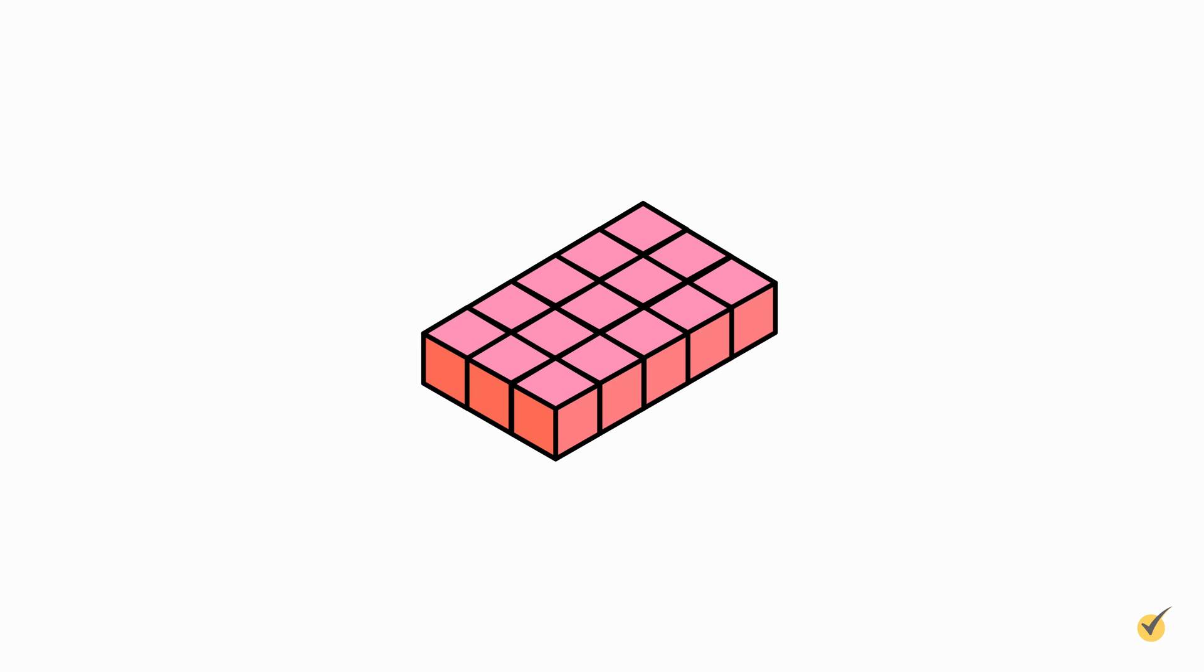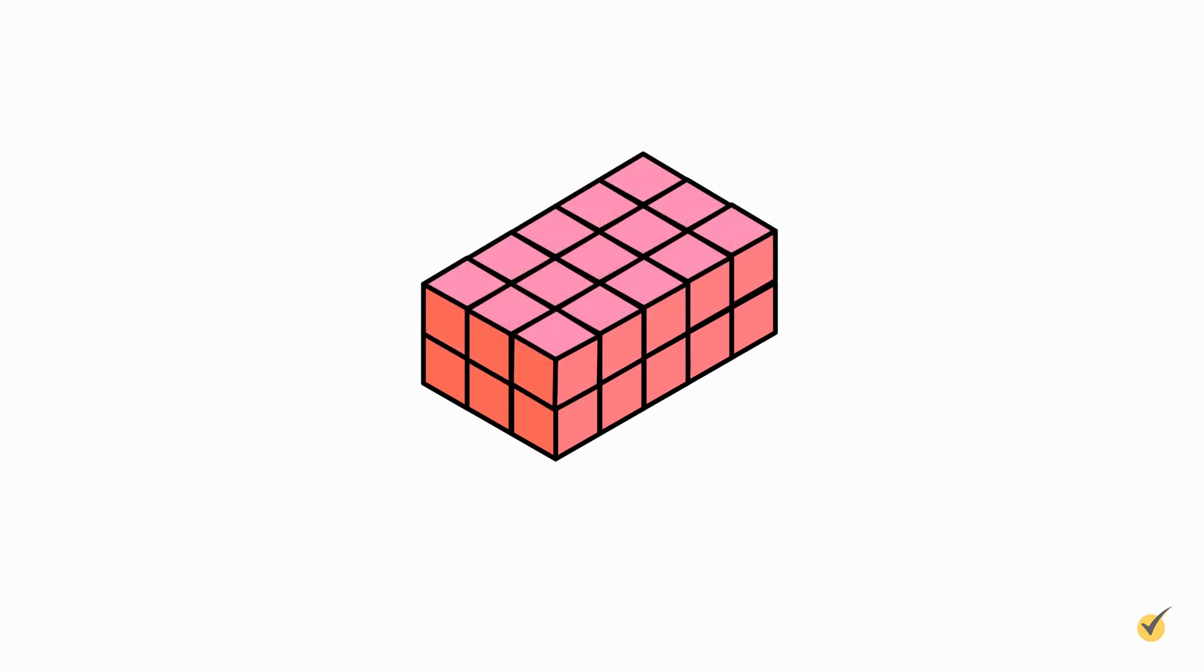But we can also stack the cubes to make it a little taller. If we place another layer of cubes on top of the first layer, we'll have a 5 by 3 by 2 rectangular prism. And since we used 15 more little cubes to make the second layer, we're up to 30 cubes altogether. So the volume of our prism is 30 cubic centimeters.